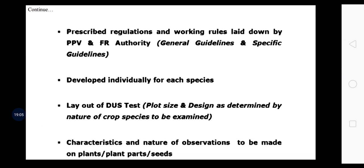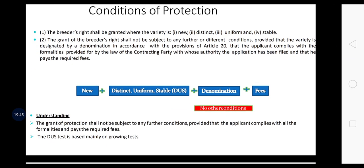Prescribed regulations and working rules laid down by the PPVFR authority — both general guidelines and specific guidelines — should be read before submitting the application. Guidelines are developed individually for each species: for example, different guidelines exist for rice, maize, and so on. These guidelines include the layout of the DUS test, plot size, design as determined by the nature of the crop species to be examined, and the characteristics and nature of observations to be made on plant, plant parts, or seeds.